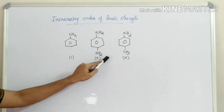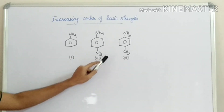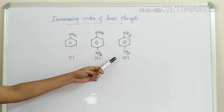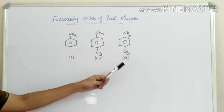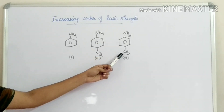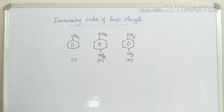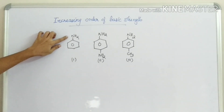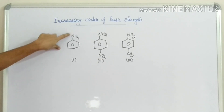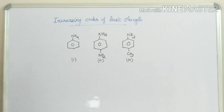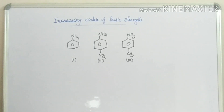Aniline also has a NO2 group. Aniline also has a CH3 group. What is the basic strength of aniline? Aniline has a lone pair of electrons, so it is basic. Ammonia is also basic because there are extra electrons.